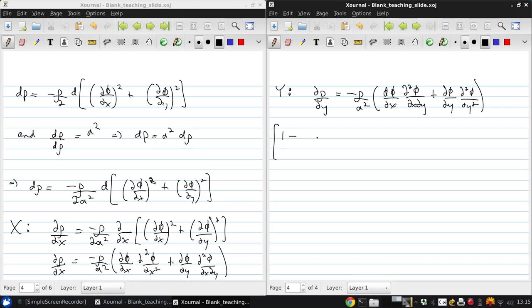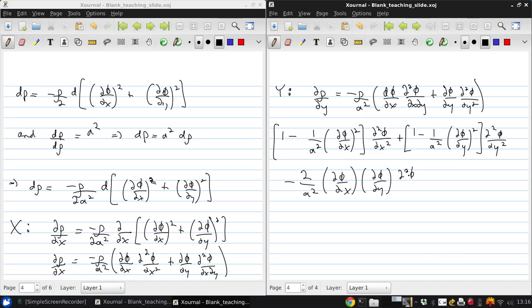we can get something that looks like this, minus 2 over a squared, dv dx, dv dy, d squared b dx dy, equals zero.